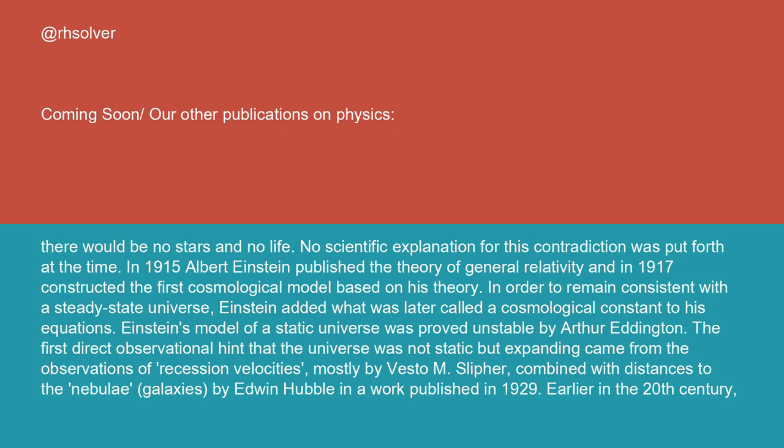In 1915, Albert Einstein published the theory of general relativity and in 1917 constructed the first cosmological model based on his theory. In order to remain consistent with a steady state universe, Einstein added what was later called a cosmological constant to his equations. Einstein's model of a static universe was proved unstable by Arthur Eddington.